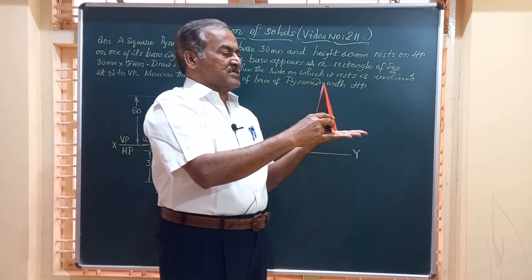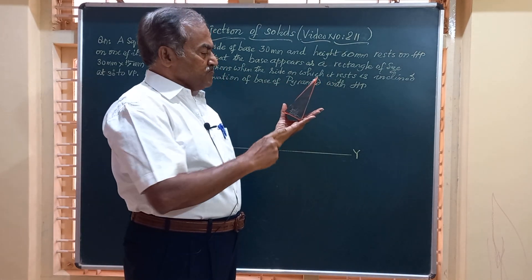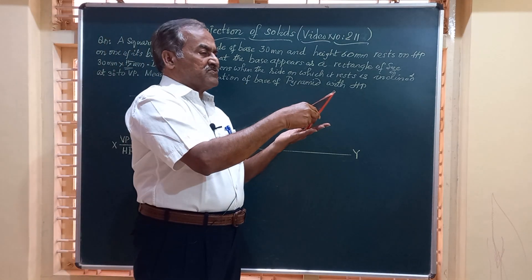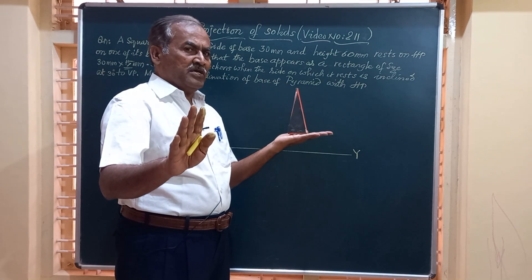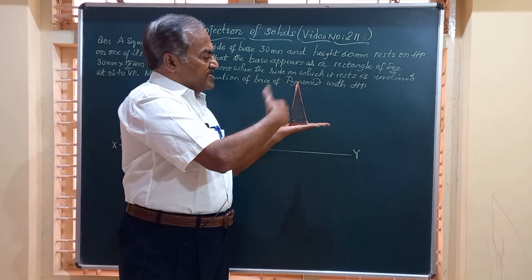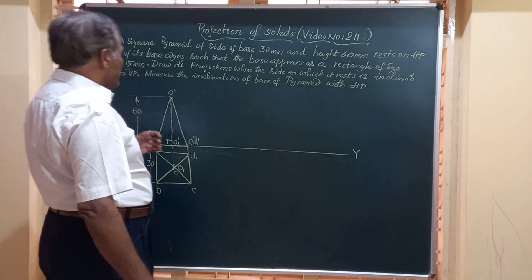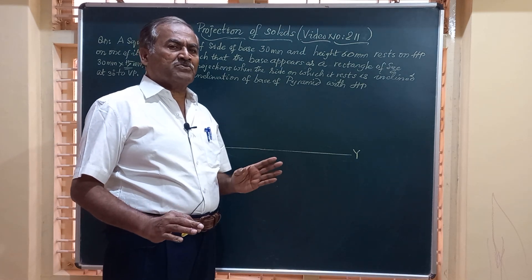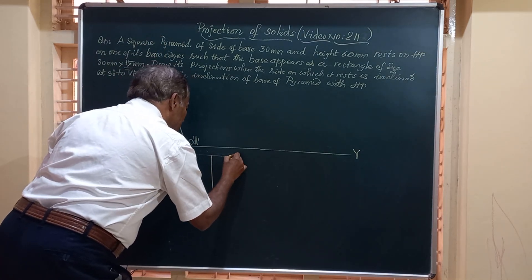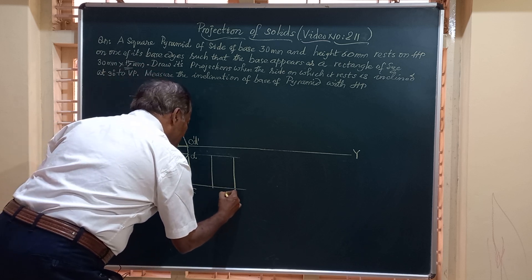Now it says the pyramid is resting on one of the base edges, meaning we tilt the object. For this particular position, the inclined line gets a length of 15 mm — it was 30, it becomes 15. The two edges normal to VP remain the same length, while the lateral edges get shortened. The question specifically states the base appears as a rectangle of 30 by 15 mm. So we know the top view of the object when it is resting on one of the base edges.